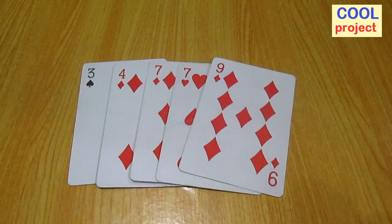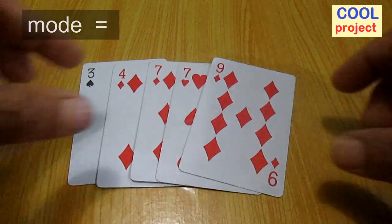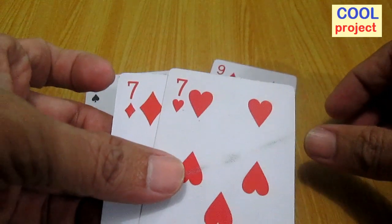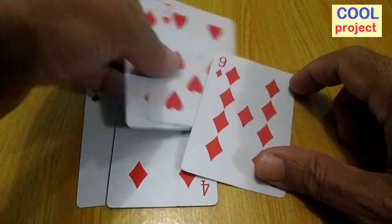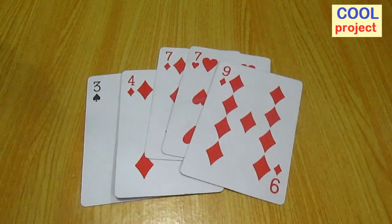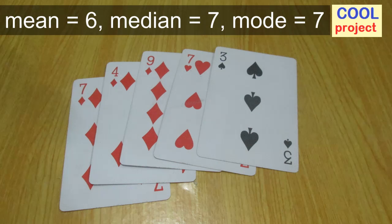Mode is the data value that occurs most often. 7 occurs twice. The mode is 7. Mean is 6, median is 7, mode is 7.